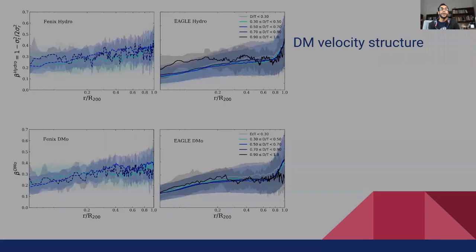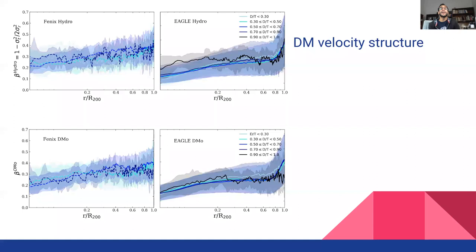Finally, we analyze the dark matter velocity structures. In this figure, we show beta as a function of radius. Dotted lines indicate the median of the distribution in the case of the Phoenix halos and solid lines in the case of the Eagle halos in the right panels. Beta is divided with disk fraction bins.